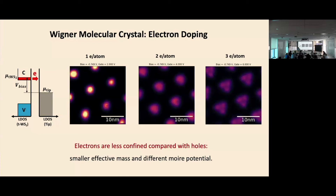Regarding incommensurate filling: when it is a partially filled case, for example between one and two electrons, some positions will look like one electron and some like two electrons, forming something like a generalized Wigner crystal configuration where two-hole lattice sites avoid nearest neighbors. For a really incommensurate case, it is hard for STM to tell if there is an incompressible state — with STM you only look at localized configurations and often still see fairly well-defined one or two occupations at different positions.